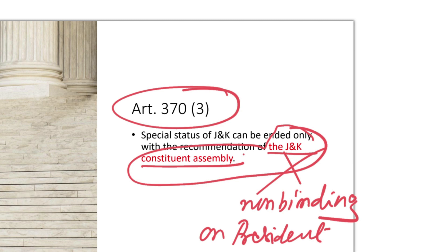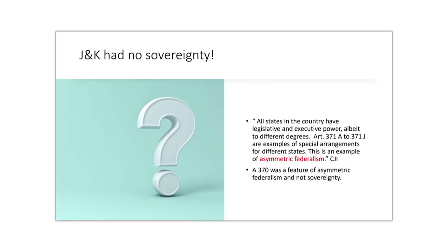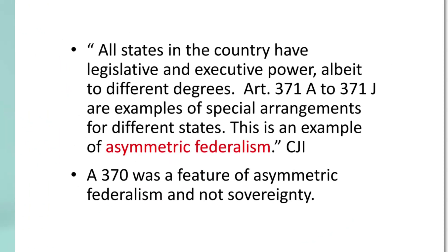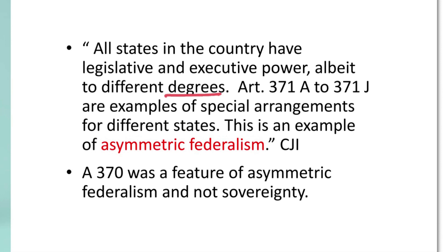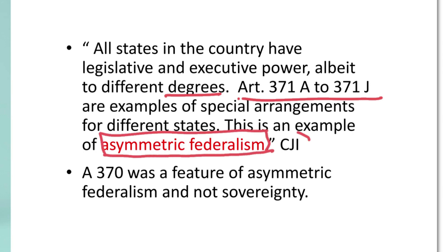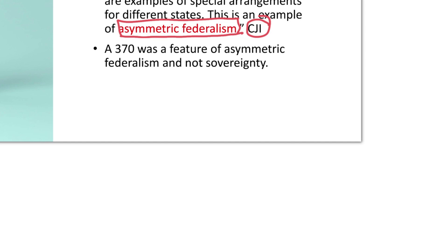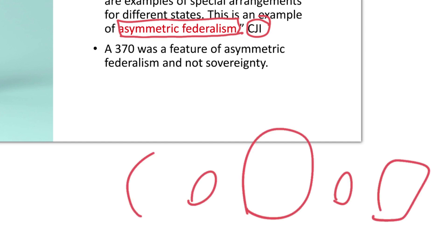So why did the court think this way? The CJI gives a very provocative explanation. He says all states in the country have legislative and executive power, albeit to different degrees. Articles 371A to 371J are examples of special arrangements for different states. This is an example of asymmetric federalism — that is what the Chief Justice wrote.